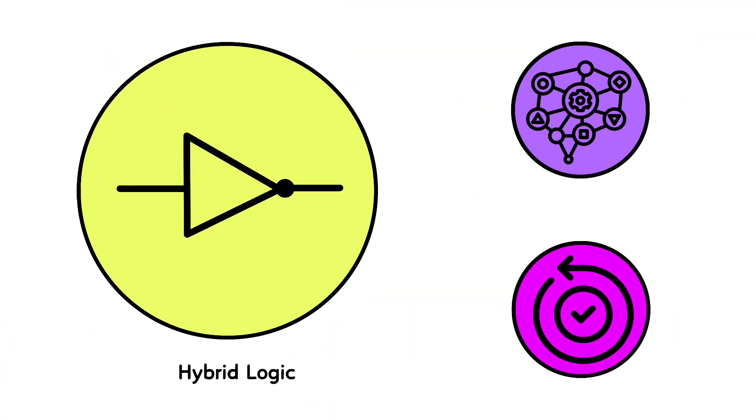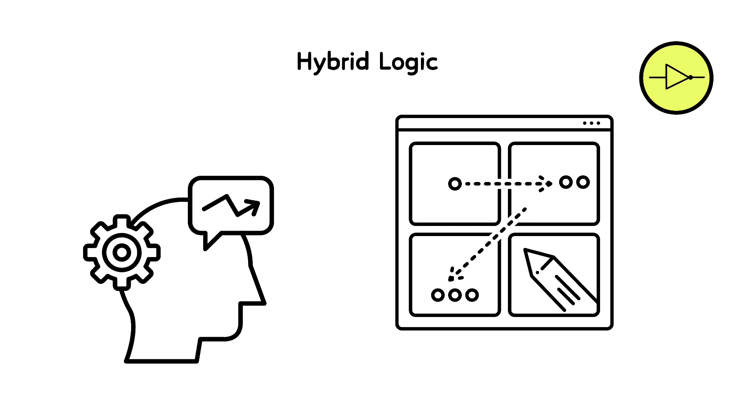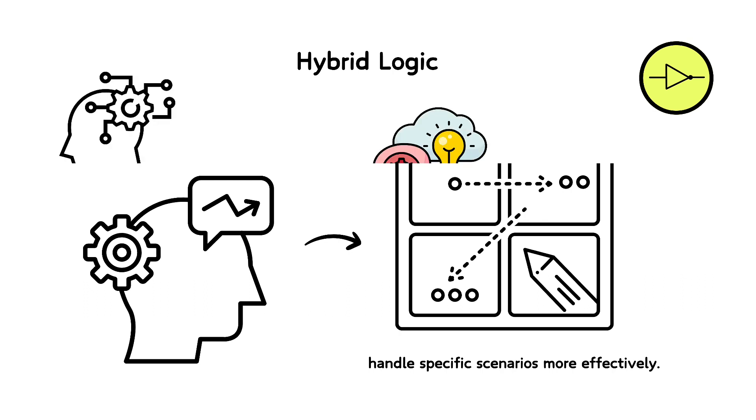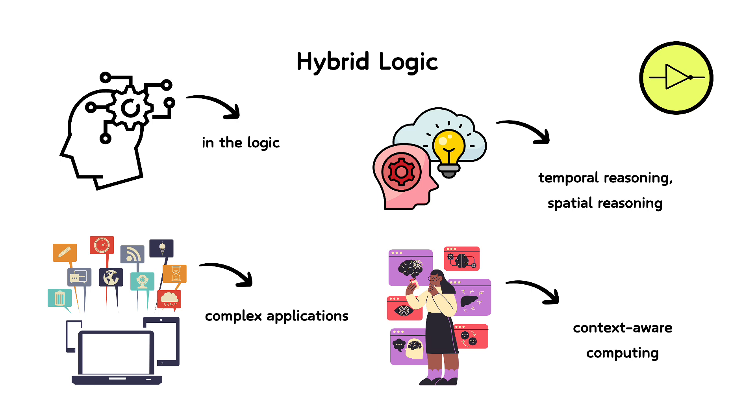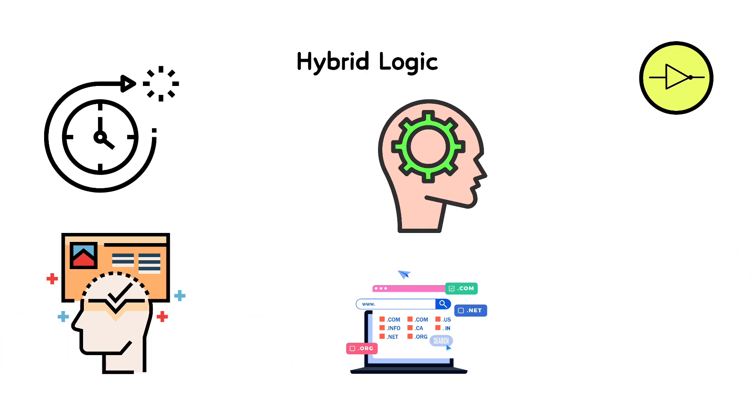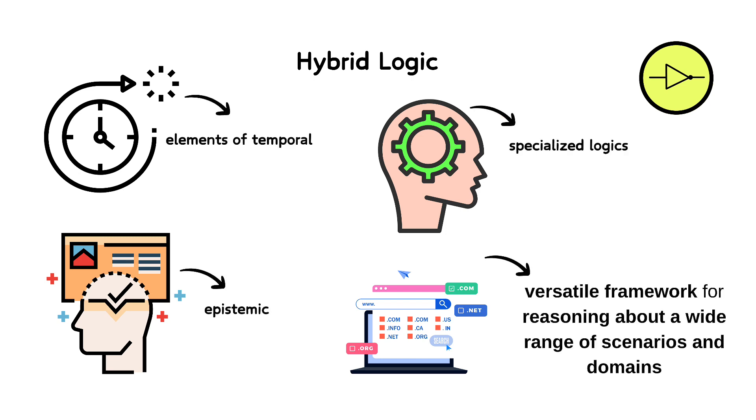Hybrid logic combines features of several logics, often enhancing modal logic with additional operators to handle specific scenarios more effectively. It allows for referencing times, places, or individuals directly in the logic, making it extremely useful for complex applications like temporal reasoning, spatial reasoning, and context-aware computing. Hybrid logic can be tailored to include elements of temporal, epistemic, or other specialized logics, thereby providing a versatile framework for reasoning about a wide range of scenarios and domains.